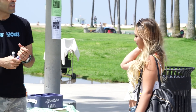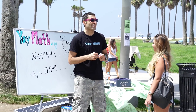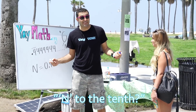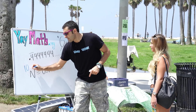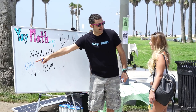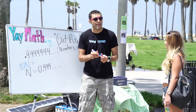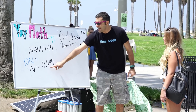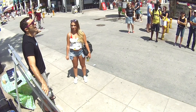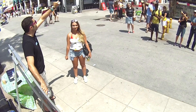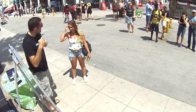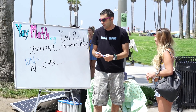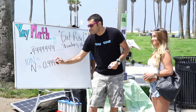If we multiply n by 10, we get 10n. And multiplying 0.444 repeating by 10 means moving the decimal one place to the right, making it 4.444 repeating. So we have: 10n = 4.444 repeating and n = 0.444 repeating.